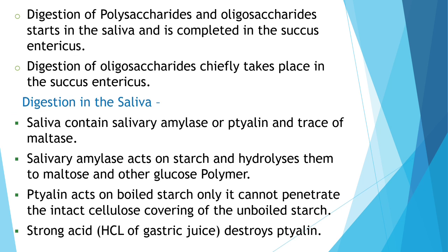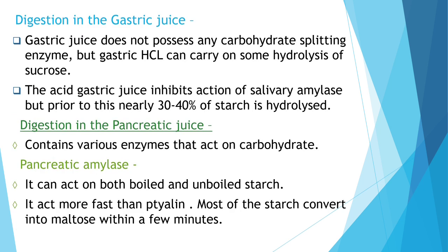A strong acid destroys ptyalin. In the gastric juice, there are no carbohydrate-splitting enzymes, but gastric HCl can carry on some hydrolysis of sucrose. The acid gastric juice inhibits the action of salivary amylase, but prior to this, nearly 30 to 40% of starch is already hydrolyzed.